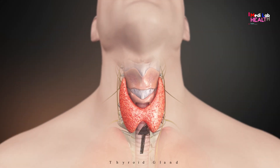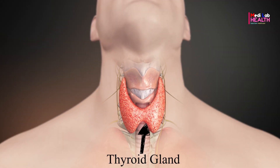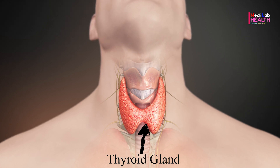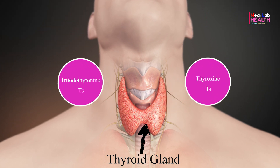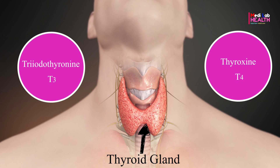The thyroid gland is a small butterfly-shaped gland in the neck, just in front of the trachea. One of its main functions is to produce hormones that help regulate the body's metabolism. These hormones are called triiodothyronine, or T3,